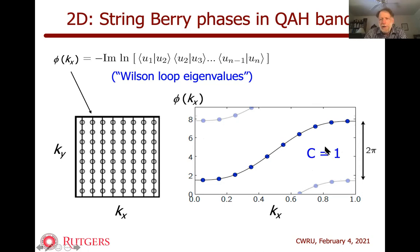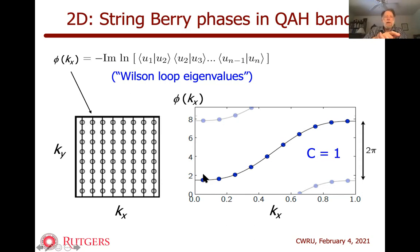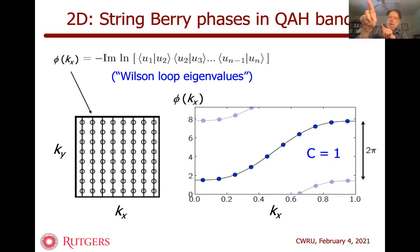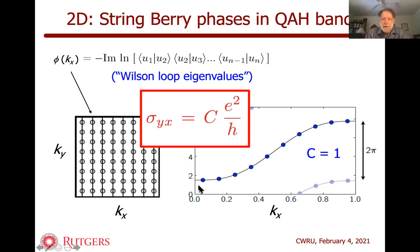For the Chern number to be non-zero, the system has to have broken time reversal symmetry — it has to be a ferromagnet. We can classify all two-dimensional insulators by their Chern numbers. If you start with a system with Chern number one and try to modify the Hamiltonian to make it Chern number zero, you can't do it without closing the gap and making it a metal — then you can open the gap again. If you try to do it keeping the gap open, you can't, because this is a winding number. You can't continuously deform something that winds around to something that doesn't wind around — that's the nature of topology.